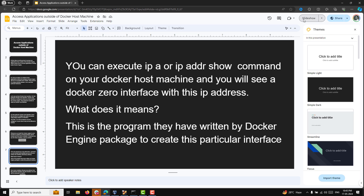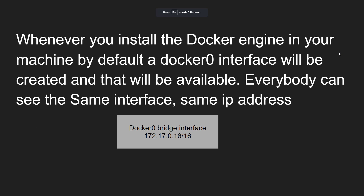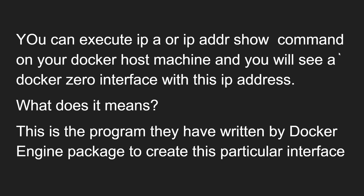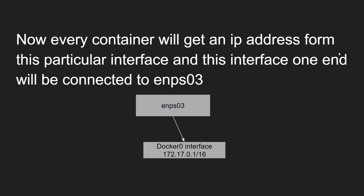So whenever you install the Docker engine on your machine, by default a docker0 interface will be created — I have shown you that. You can execute the `ip address show` command on your Docker host machine and you will see the docker0 interface with this IP address. The Docker engine package has a program already written to create that particular interface. Every container you create will get an IP address from this docker0 interface.